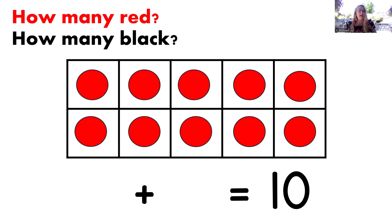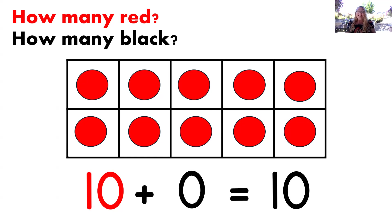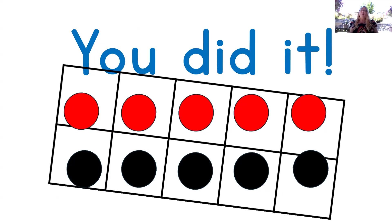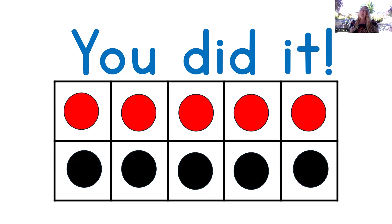Oh my goodness, look at this one. How many dots are red? That's right, ten. And how many are black? Zero. Let's read that one: ten plus zero equals ten. Excellent job. Wow, you did it! You did a great job with number combinations to ten. Thanks for learning with me today, and I sure hope to see you again very soon.